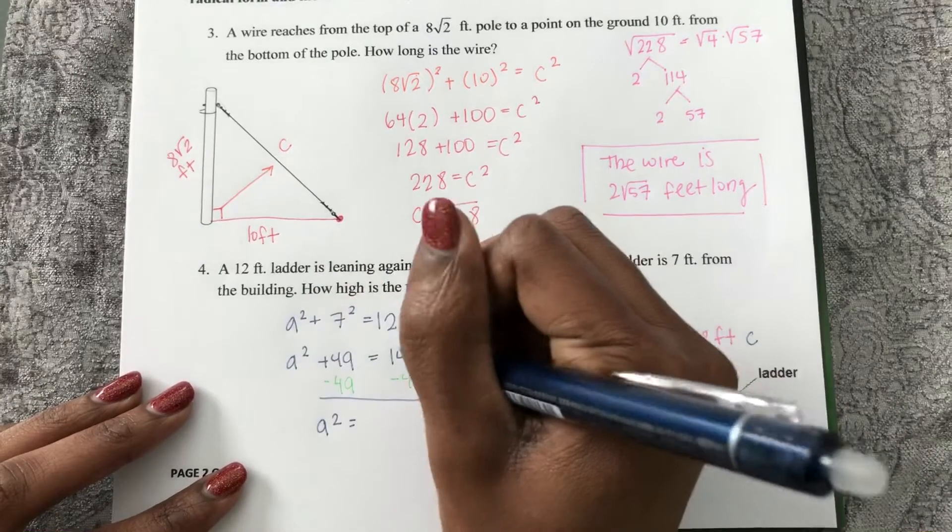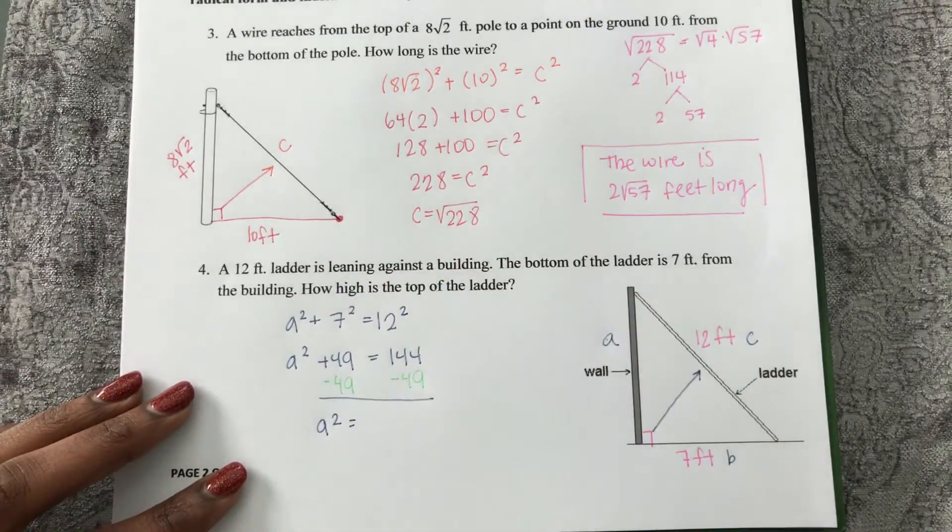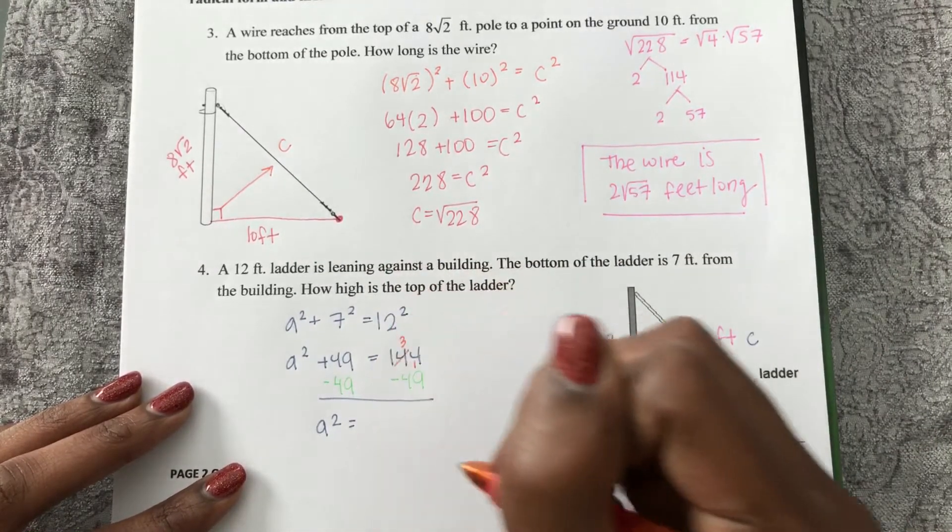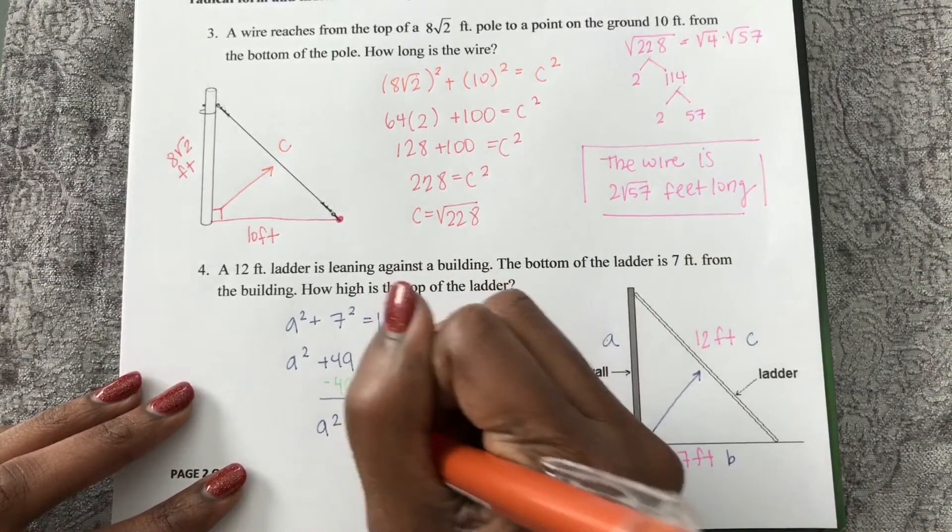So A squared equals, I can borrow from here, make that a 3. And so that's going to be 95.